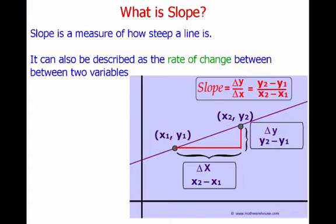For this video, we are going to be discussing slope. So what is slope? Slope is really just a measure of how steep a line is. It can also be described as the rate of change between two variables. Another way that a lot of people like to describe slope is that it is the rise divided by the run.